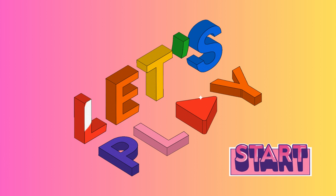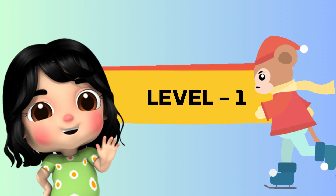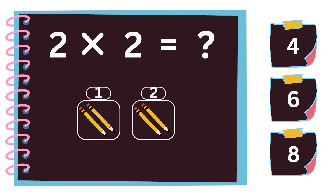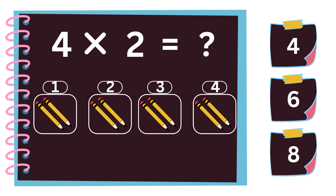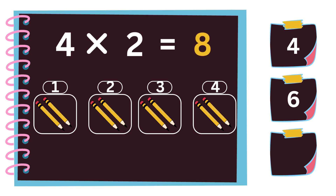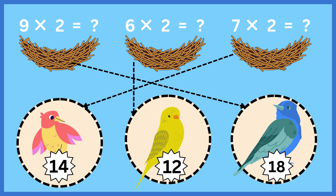Let's play a game. There are three levels. Level one. Two twos are four. Four twos are eight. Match the birds to its nest. Nine twos are eighteen. Six twos are twelve. Seven twos are fourteen.